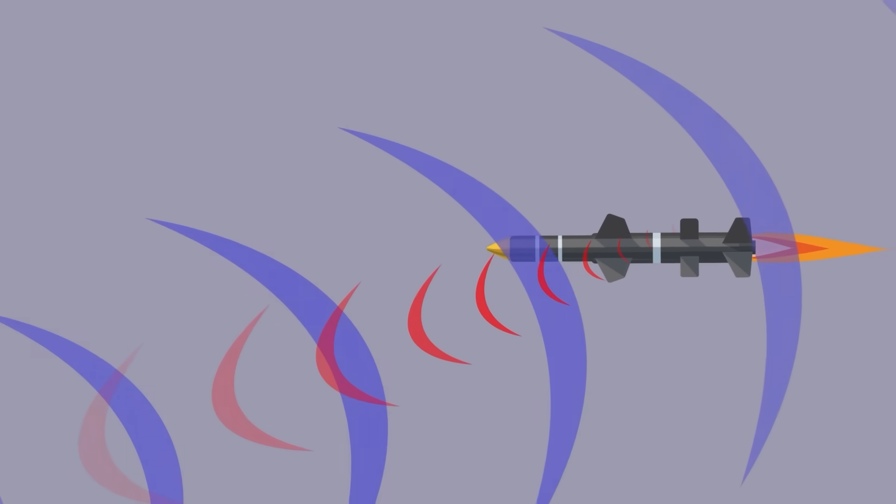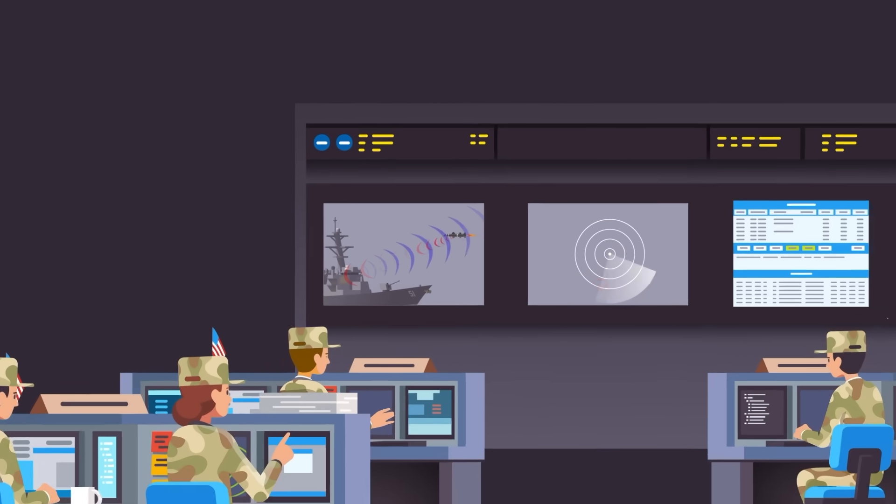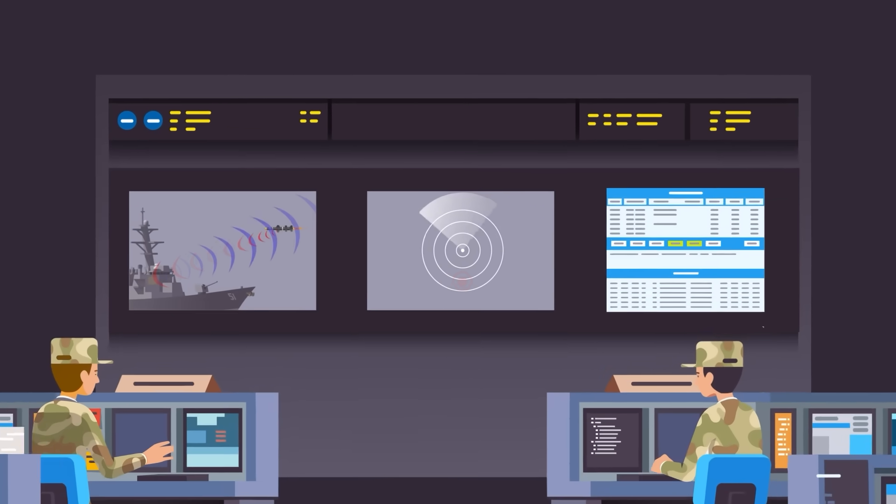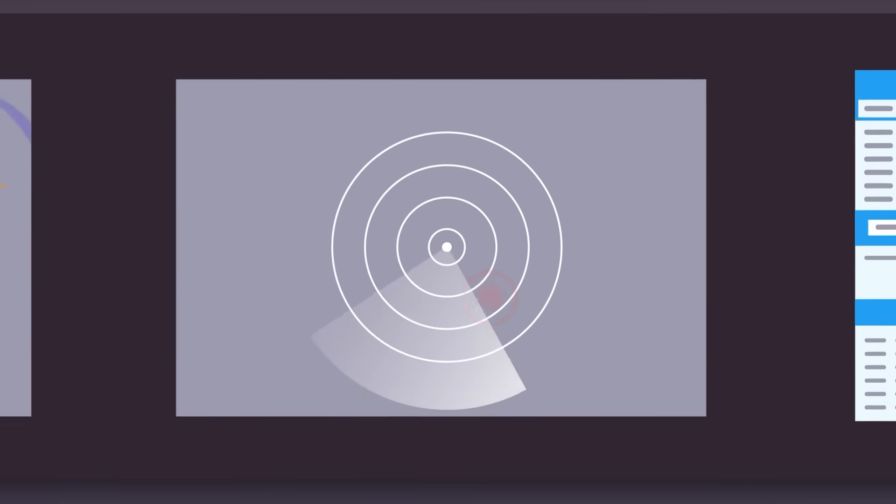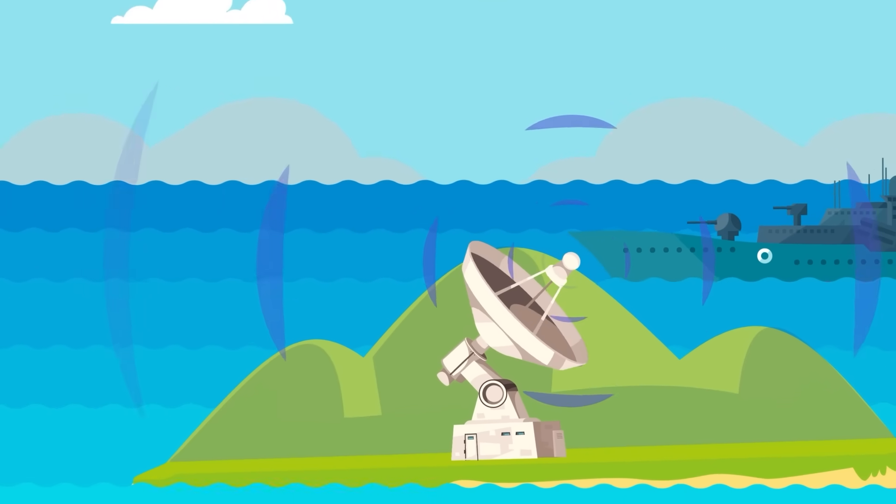Another factor US planners had to consider for Aegis, and any other fire control radar for that matter, is radar cross-section. Radar cross-section, or RCS, is the part of an inbound contact that reflects directed radar energy and can be seen on the screen of the operator's console. All military operations aim to minimize RCS as much as possible.